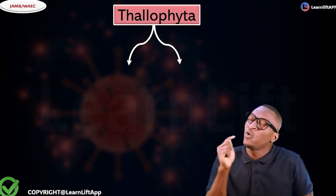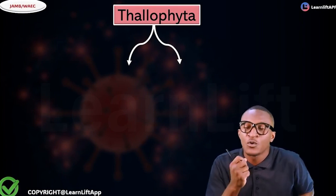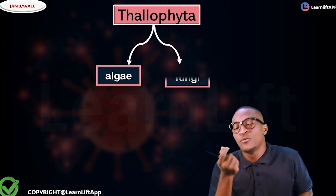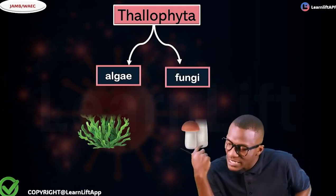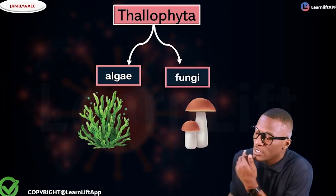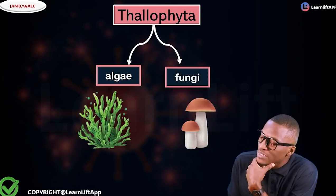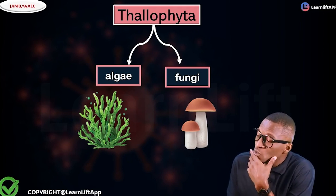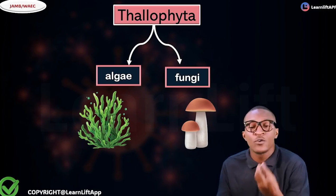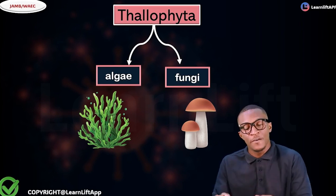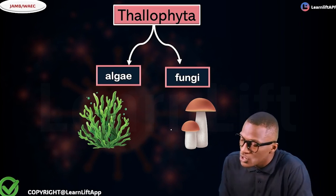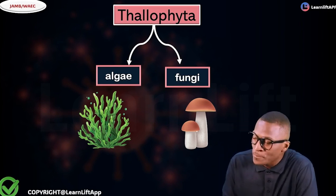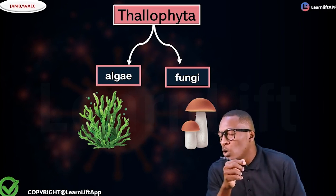Thallophytes are divided into two groups: those that have chlorophyll are called algae, while those that lack chlorophyll are called fungi. Both of them are thalloid plants, but algae have chlorophyll — if you have chlorophyll you'll be green. If you lack chlorophyll you will not be green. So these ones are your algae, and these ones are your fungi.